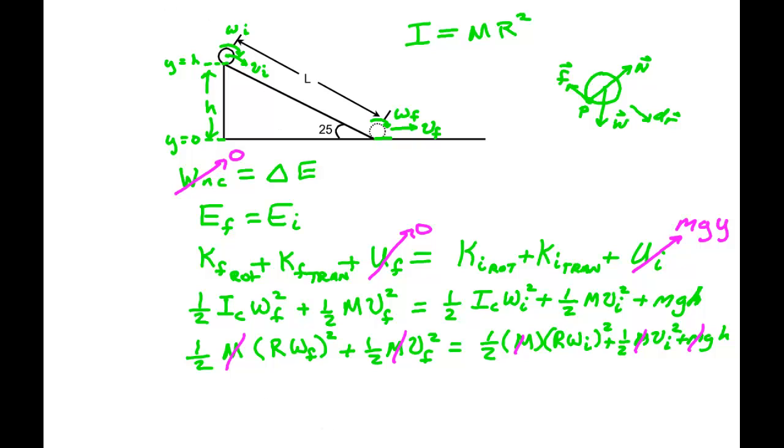Now we have the no slip condition, V is equal to R Omega. This is the no slip condition. And it's because everything is going around in Omega about the point of instantaneous contact. So this velocity here, V, is equal to this distance there, R, times this Omega. So the fact that it doesn't slip means that there is a connection between the center mass velocity and the angular velocity by this formula.